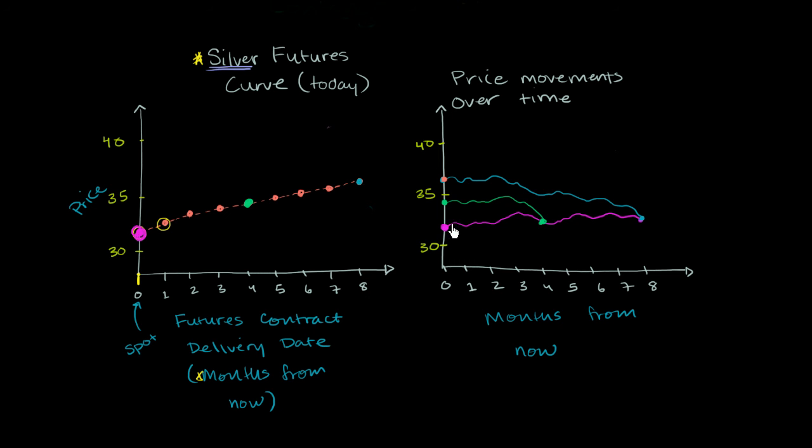So this is kind of closer to a traditional stock chart. This just tells us that the spot price started at $32. It went up a little bit, went down a little bit. It kind of just goes up and down, oscillates a bit over the next eight months. So this is actual movement over time. This is a snapshot of delivery dates at some points in the future. So the spot price just moves around.